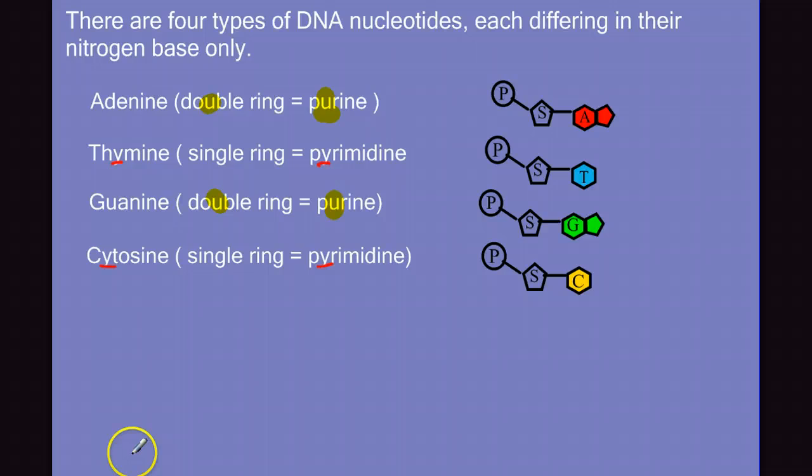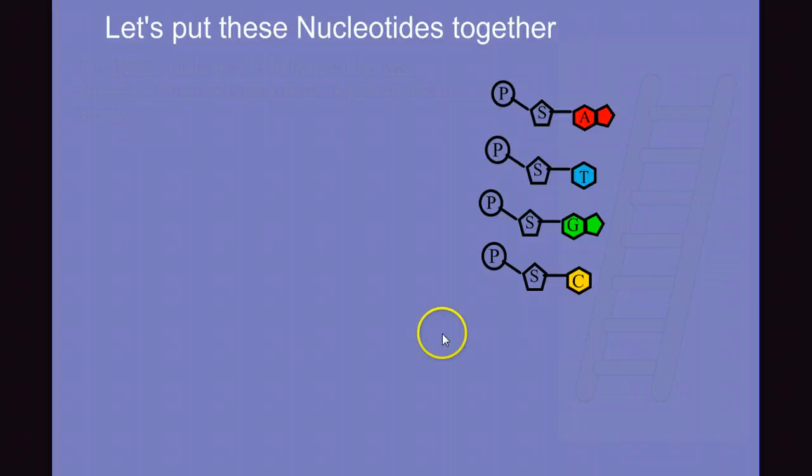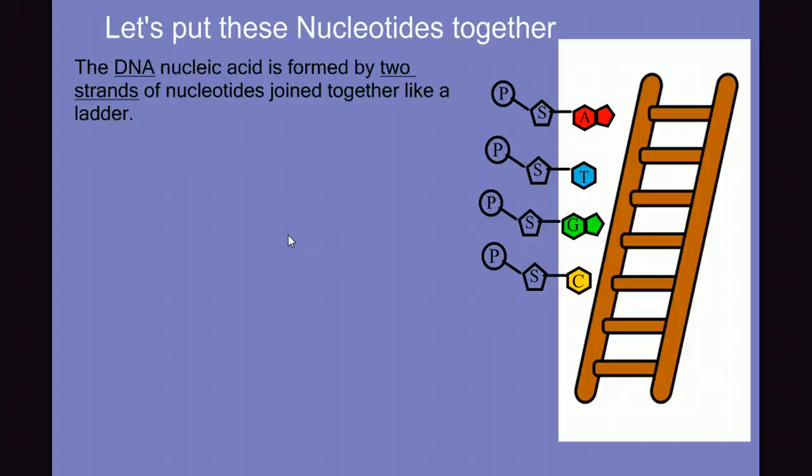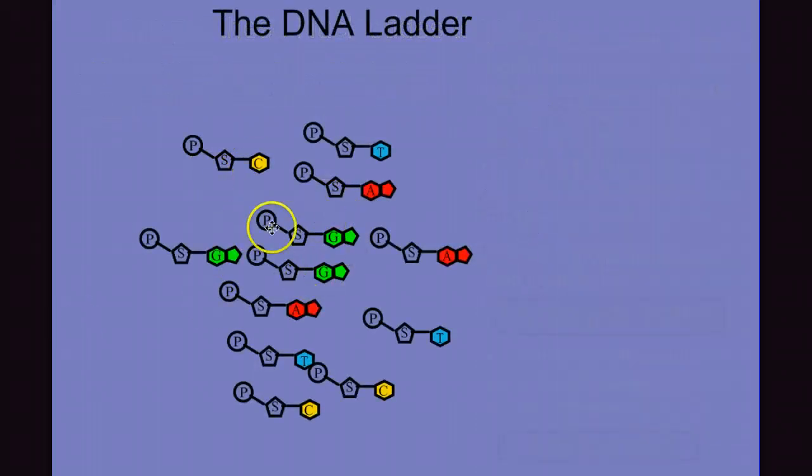So that's the little trick that I use. It's good to know which ones are which. Now these nucleotides are just the building blocks for a large DNA molecule. So we need to put these nucleotides together. In DNA, the nucleotides are formed by two strands joined together kind of like a ladder. So let's build our own DNA ladder.